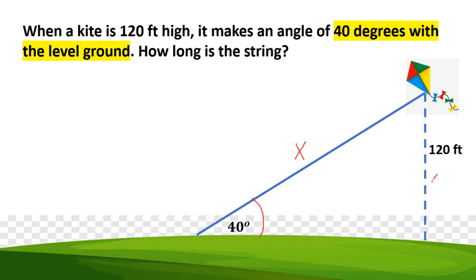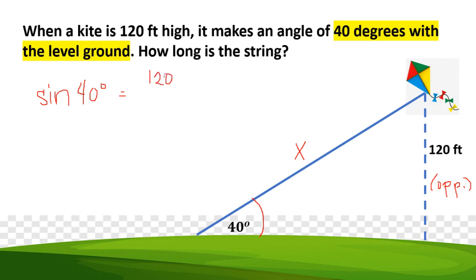Label the string length as x. The reference angle is 40 degrees, so this is the opposite side and x is the hypotenuse. Using opposite and hypotenuse, the trigonometric function is sine. Sine 40 degrees equals opposite over hypotenuse: 120 over x. Cross multiplication gives x equals 120 divided by sine 40 degrees.